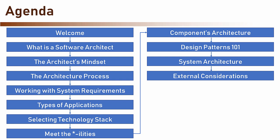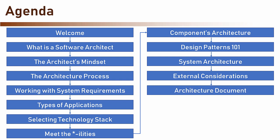And then, drum rolls please, we arrive at what is perhaps the most important section in this course: the architecture document. This document is a culmination of the architecture process. It is the product of the requirements, technology stack, components architecture, systems architecture, external considerations, coffee-saturated meetings, and long, silent writing sessions. The document describes the architecture designed for the system and contains everything the developers and team leaders need to know in order to start developing the system. In this section, we will go through the document's goal, audience, and structure, and discuss the content of each section in the document.